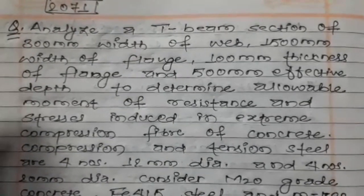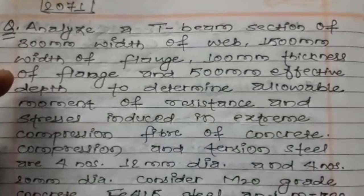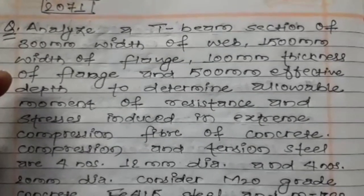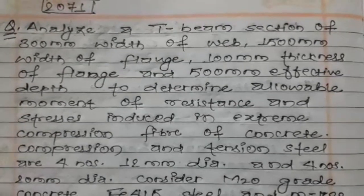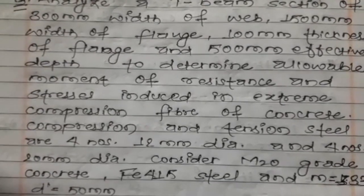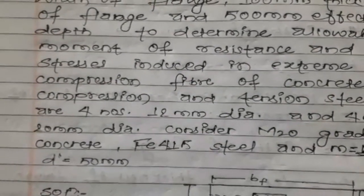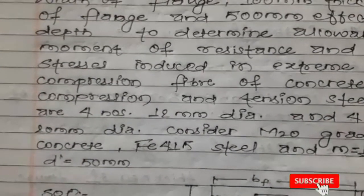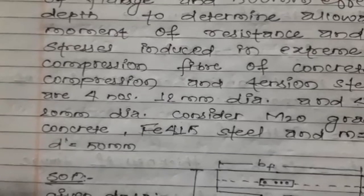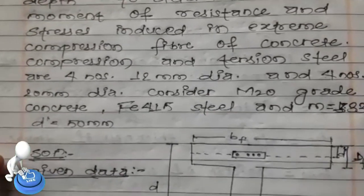This is a T beam problem from 2021. Analyze a T beam section with 300 mm width of web, 1500 mm width of flange, 100 mm thickness of flange, and 500 mm effective depth, to determine allowable moment of resistance and stress induced in extreme fibre of concrete. Compression steel: 4 numbers of 12 mm bars. Tension steel: 4 numbers of 20 mm bars. Consider M20 grade concrete, Fe 415 steel, modular ratio m = 13.3, and cover d' = 50 mm.